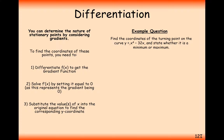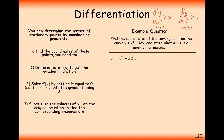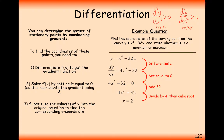Let's have a look at an example: y equals x⁴ minus 32x. We need to find the coordinates of the turning point and state whether it's a maximum or minimum. Following the step process, the first thing we do is differentiate the function, giving us 4x³ minus 32. The second thing we do is set the differential equal to zero: 4x³ minus 32 equals zero, which gives us x equals 2.